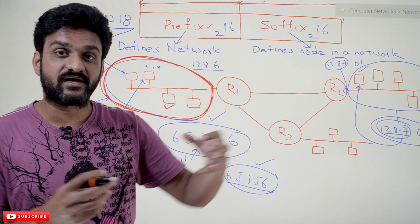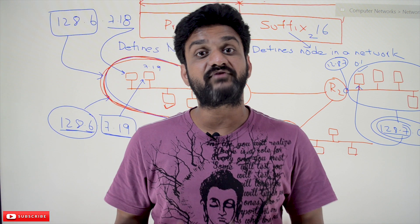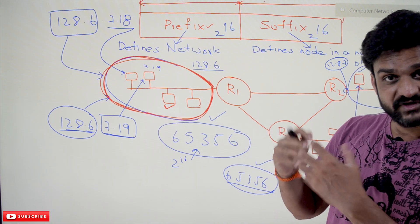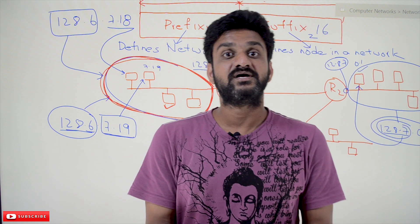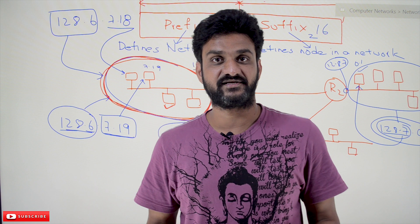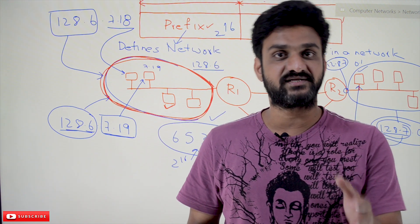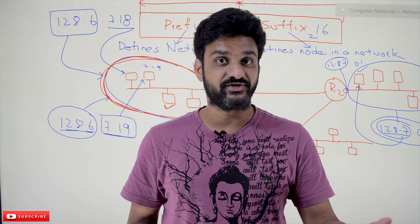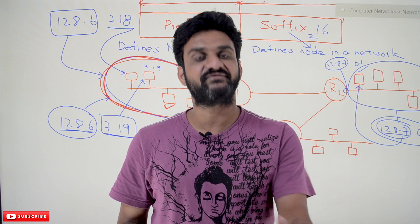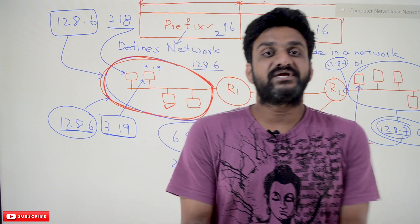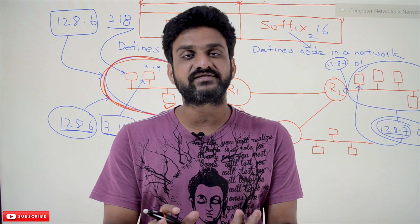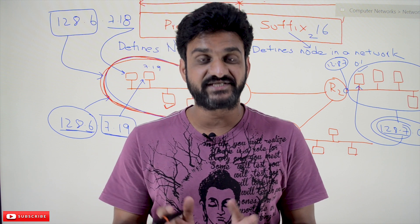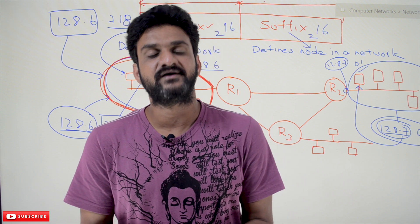So efficient utilization of IP addresses is not possible with a fixed-length hierarchical division. To address this, there are mechanisms called classful addressing and classless addressing, which we will discuss in our next video. Hope you got clarity on this concept. Thanks for watching. If you haven't subscribed to our channel, please subscribe and press the bell icon for the latest updates. Post any doubts in the comment section, give a like if this was helpful, and share with your friends.